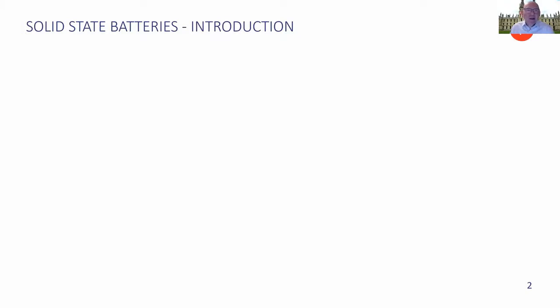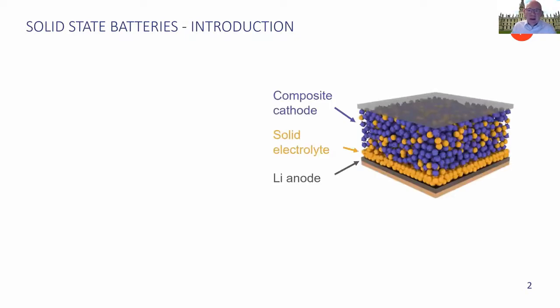We have a very wide range of people taking part in this conference, so let me start by reminding everyone what a solid-state battery is. This is a schematic: it consists of a solid electrolyte represented here by the orange spheres instead of a conventional liquid, a lithium metal negative electrode, and a composite cathode — a mixture of the solid electrolyte and the active cathode materials.